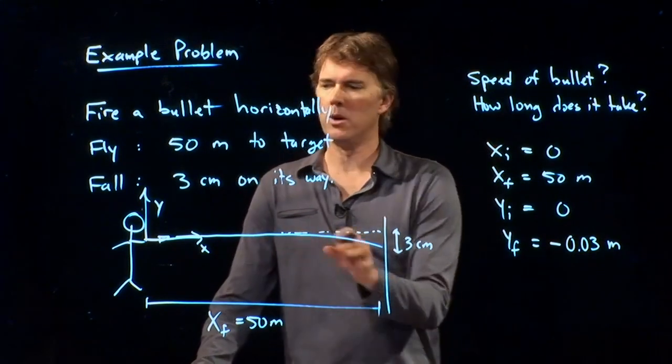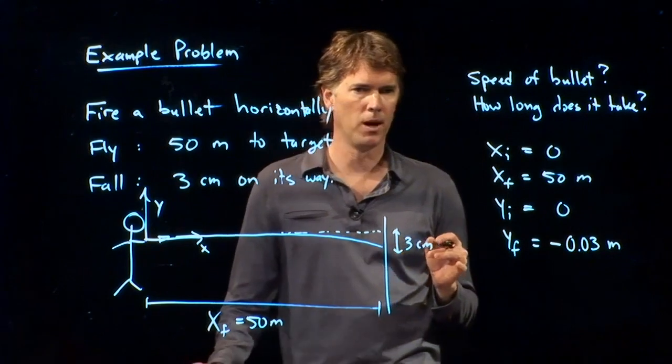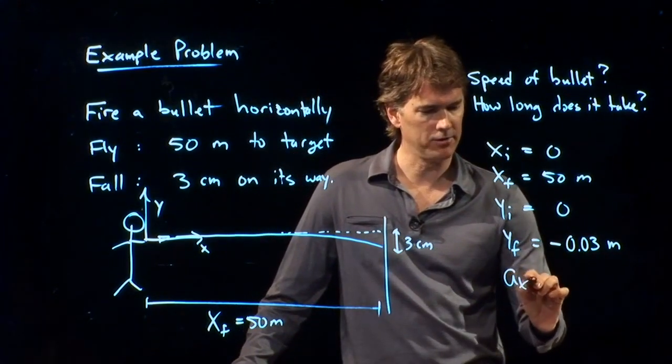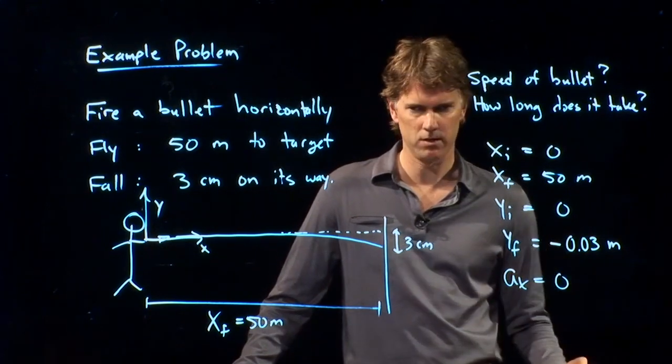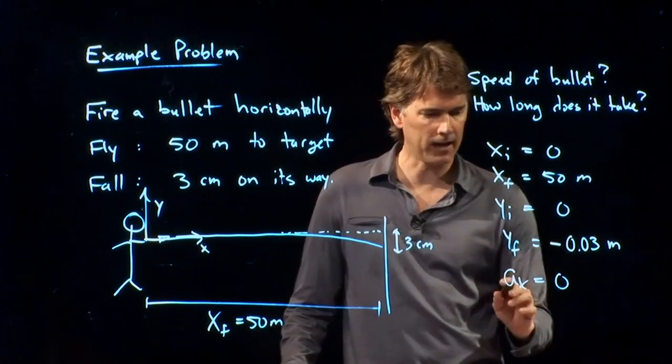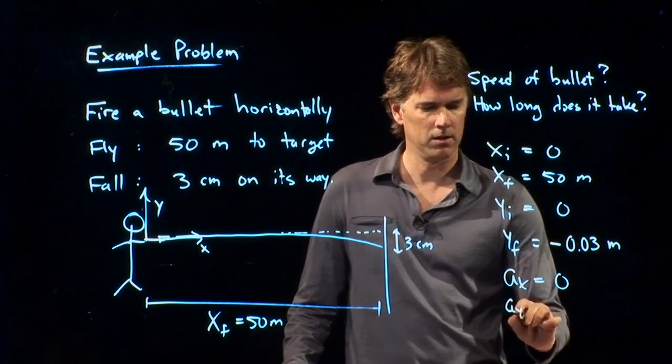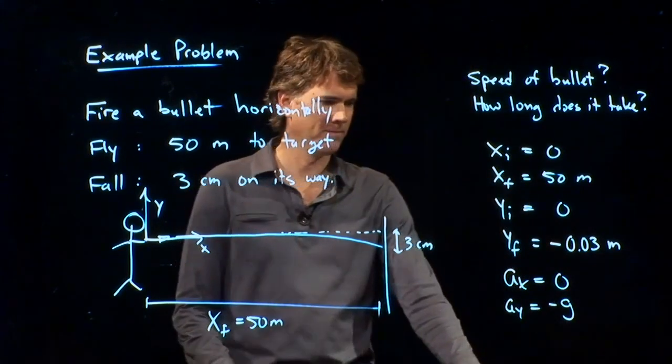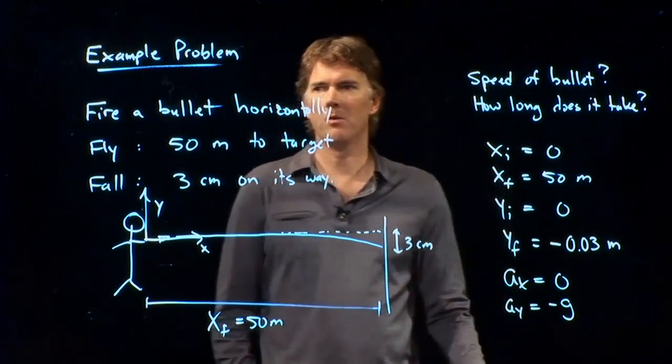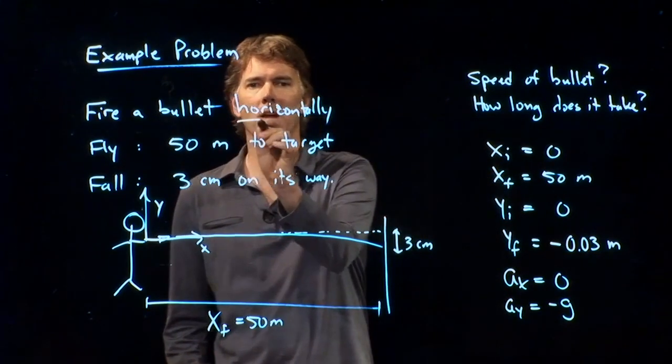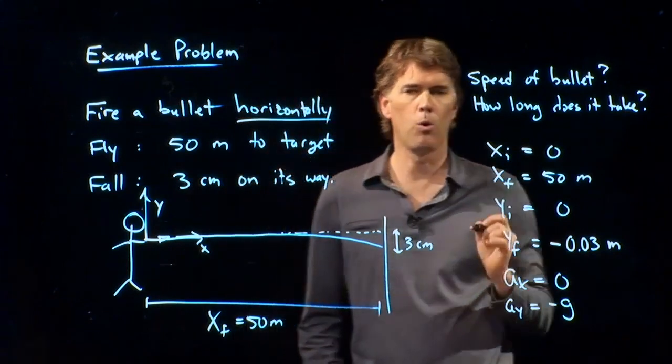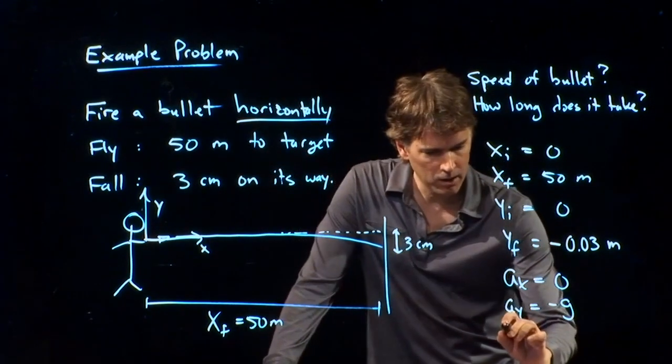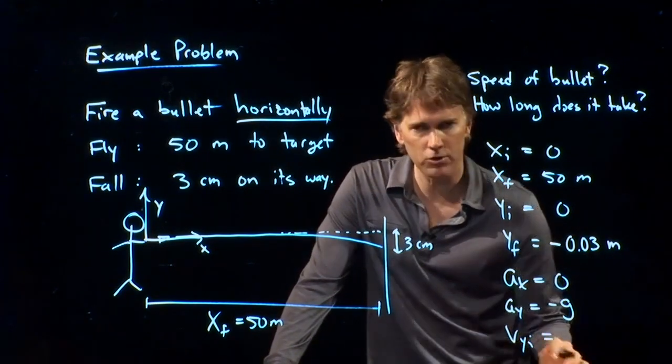What else do we know about the motion of this bullet? Well, it's projectile. So a projectile has zero acceleration in the x direction, a_y = -9.8 in the y direction, and we also know something else.